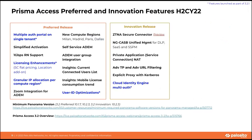Many innovations have already been delivered in 3.2. In this update, we're digging deeper into the features highlighted in blue: multiple auth portals on a single tenant, licensing enhancements, granular IP allocations per compute region, User ID optimizations, and CIE — Cloud Identity Engine — multi-auth.